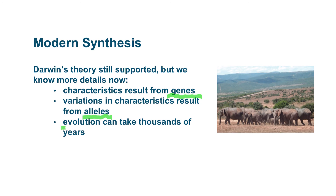We also know now that evolution can take thousands of years, although in some cases it can happen over the course of a few generations. So make sure you understand the concepts that Darwin came up with and what we have been able to add to those concepts since then with the modern synthesis.